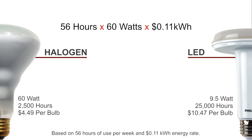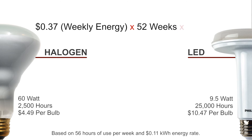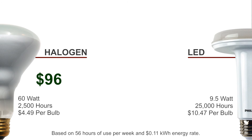56 hours times 60 watts times the 11 cent rate gives us $369.60 divided by 1000, rounded up gives us a weekly energy cost of 37 cents. Multiply that by 52 weeks, and let's multiply that by 5 to find the 5-year cost of ownership. That's $96 in energy cost.